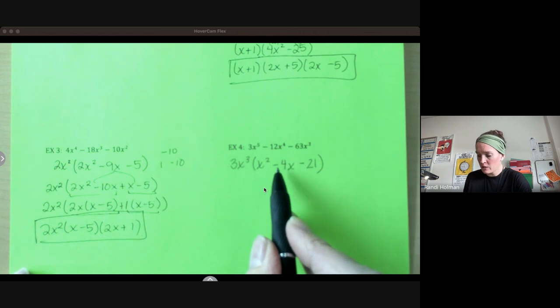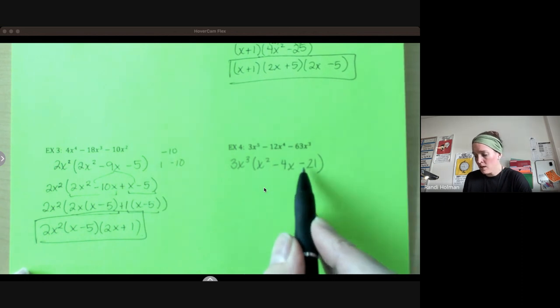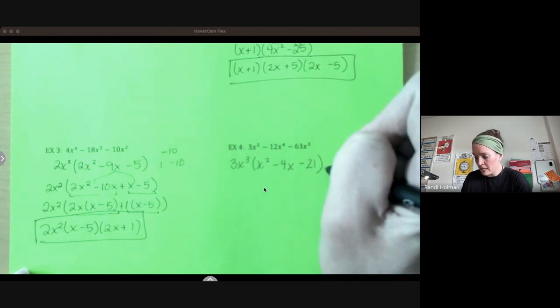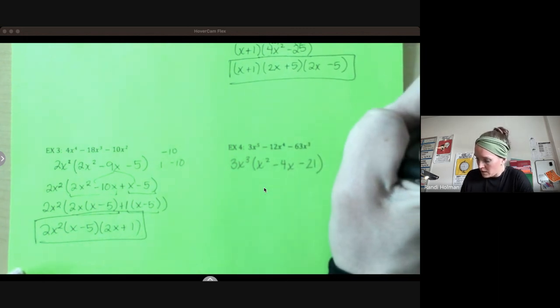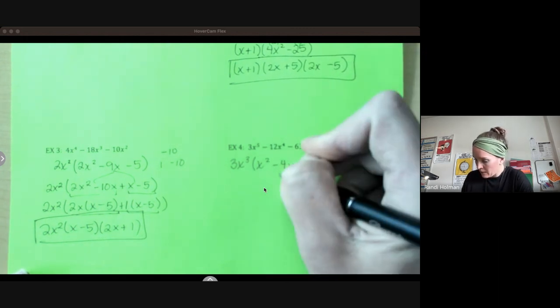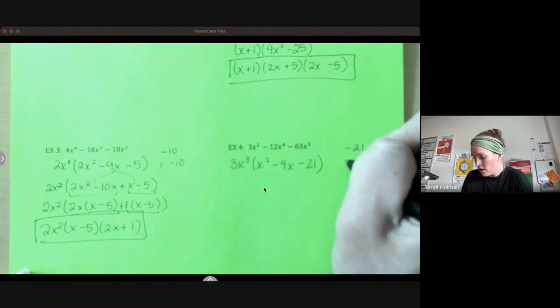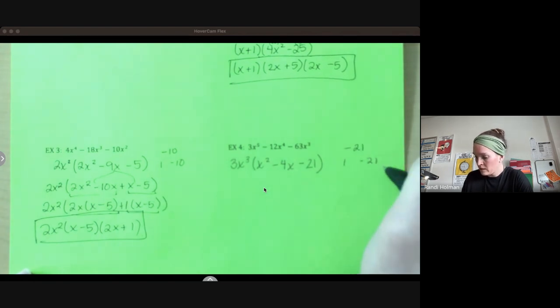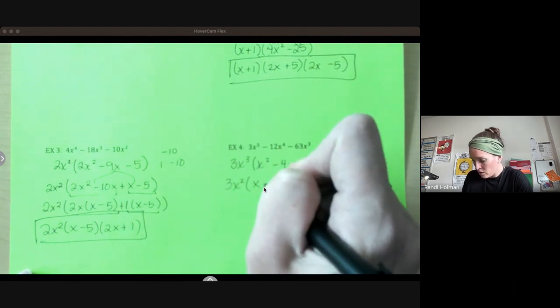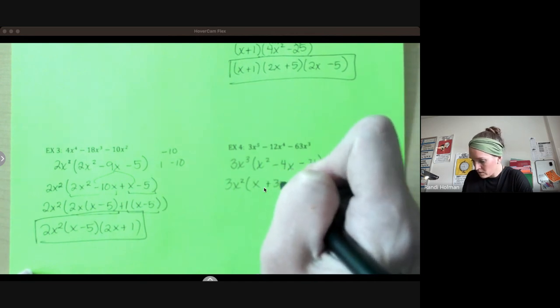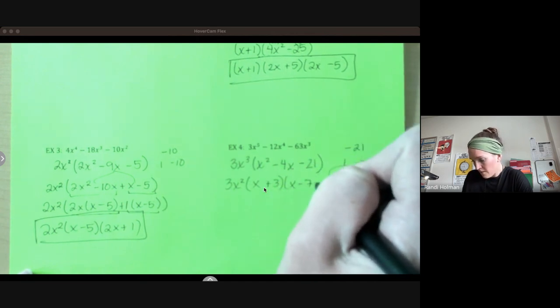They multiply to be a negative. So one's negative, one's positive. They add to be a negative. So the bigger one's negative. So I'm looking factors of negative 21 and I want them to add up to be negative four. So one and negative 21 doesn't work. Three and negative seven. That's the winner. So since my a value is just one, I can just throw those right into (x + 3)(x - 7).